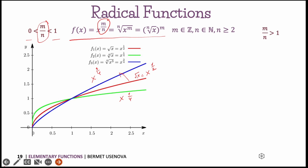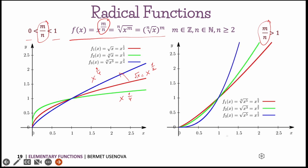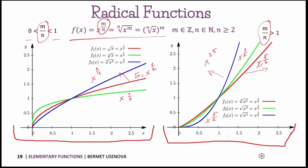When m divided by n is larger than 1, the graph looks like this. This one is x to the power of 5/2, this one is x to the power of 3/2, and this one is x to the power of 5/4. One of them is more than 2 and this one is closer to 1. You can see the pattern: for large values of m/n the graph becomes steeper and steeper and tends towards infinity. Both cases are monotonically increasing — as x increases, the function also increases towards infinity.